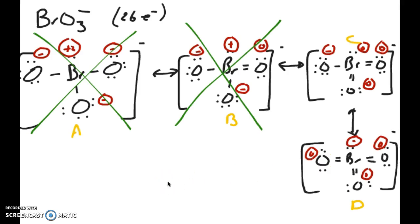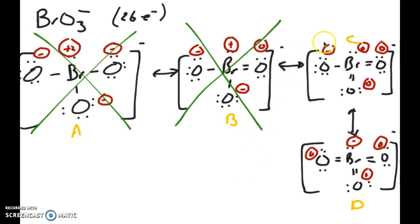Based on rule one, I can remove the first two resonance structures from consideration. I'm left with the third and fourth, which both have zero formal charges on three atoms and only one negative formal charge on one atom — except the atom differs: one has it on oxygen, the other on bromine. Rule two, which prefers smaller formal charges, doesn't help distinguish these two since they have the same distribution.